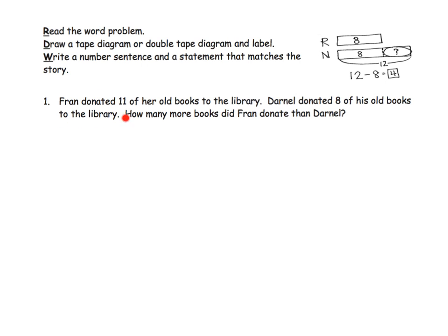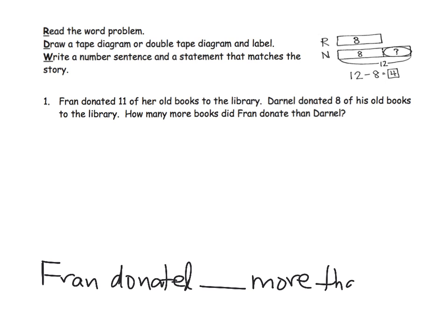So: Fran donated 11 of her old books to the library. Darnell donated 8 of his old books to the library. How many more books did Fran donate than Darnell? The idea is we first read the question, and what I like to do is think about what my answer sentence is going to be. How many more books did Fran donate than Darnell? So I'm going to write my answer statement with a blank: Fran donated blank more than Darnell. That helps students know what they're trying to answer.